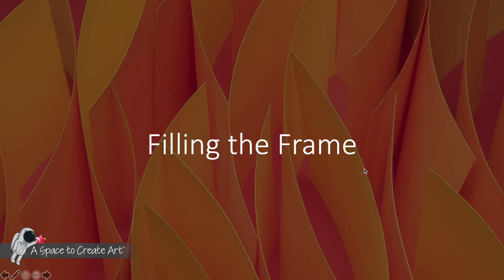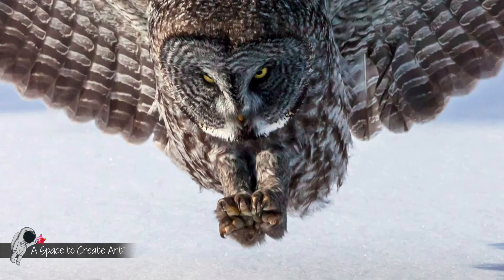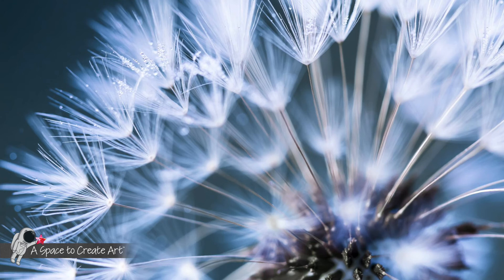Let's talk about filling the frame. One of the best ways to create a dynamic composition is by filling the frame with your artwork or photographic subject. It is difficult to create a beautiful composition with a tiny subject in the middle of a blank space. Take a look at some of the examples — like this owl. Wouldn't you hate to be the mouse located right about here?